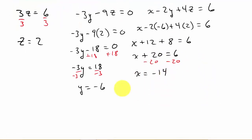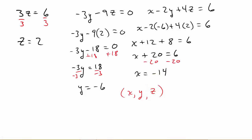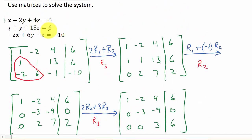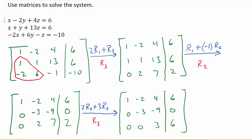Remember, you write your answer as the ordered triple (X, Y, Z). So the solution is (negative 14, negative 6, 2). Check out the other videos — I'll do one example where we get no solution and one where we have an infinite number of solutions. I hope the video helped — give it a like, share, and subscribe. Thanks for watching.